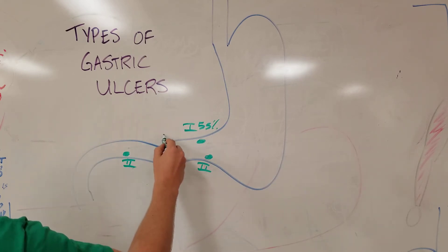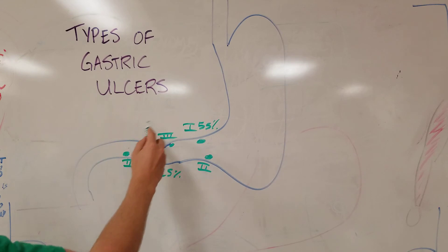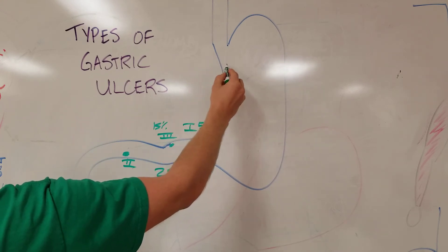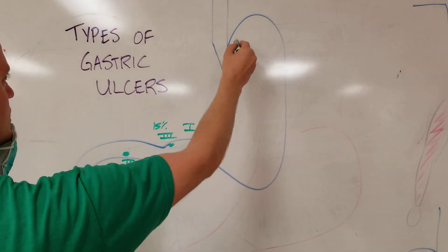So here you have your pylorus. This will be type 3 and this is a relative incidence of 15%. Type 4 is up along the more proximal stomach or along the lesser curve here, like along the cardia, somewhere in this direction.